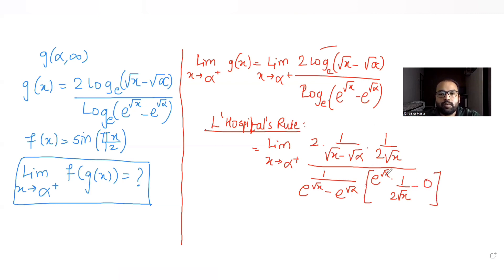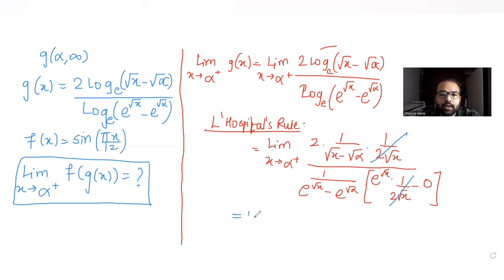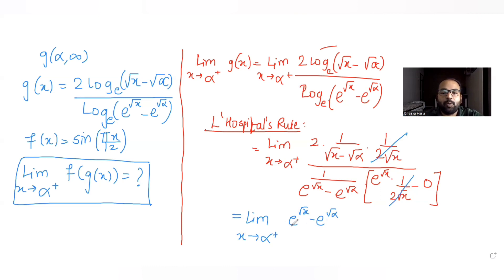The factor 1/(2√x) appears in both numerator and denominator and cancels out. What remains in the limit as x tends to α is: the factor (e^(√x) − e^(√α)) moves to the numerator (from denominator of denominator), and (√x − √α) stays in the denominator.